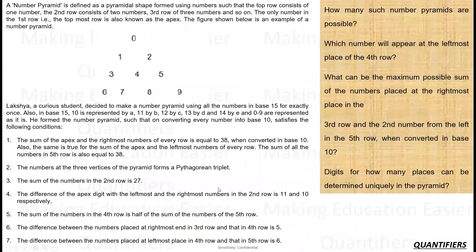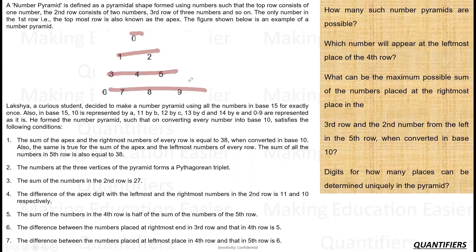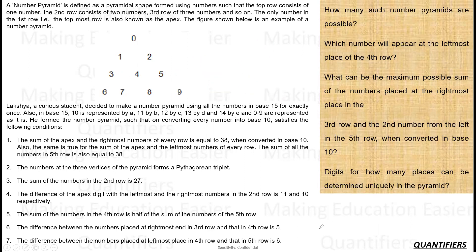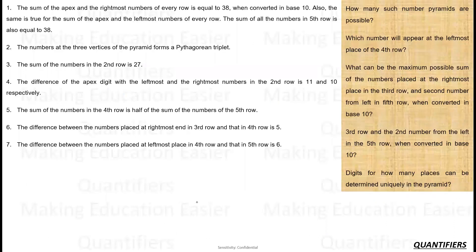Let's see what today's set is about. A number pyramid is defined as a pyramidal shape formed using numbers such that the top row consists of one number, the second row consists of two numbers, the third row consists of three numbers, the fourth row of four numbers, and so on. A curious student decides to make a number pyramid using all the numbers in base 15, meaning the numbers allowed are 0 to 14. Ten is represented by 'a', eleven by 'b' — the common notation for bases higher than 10.